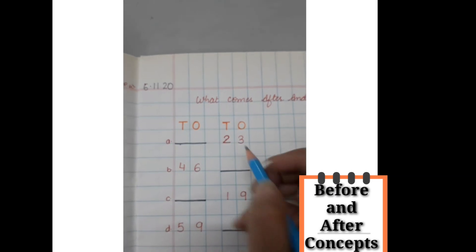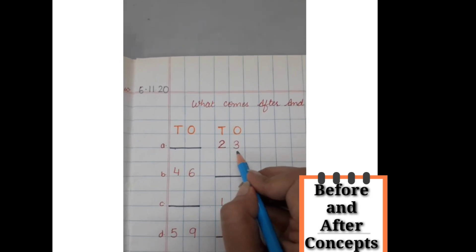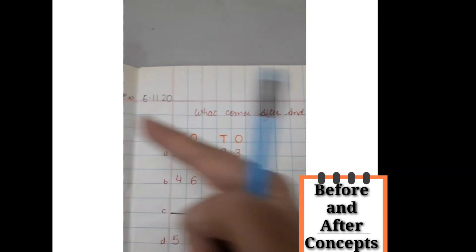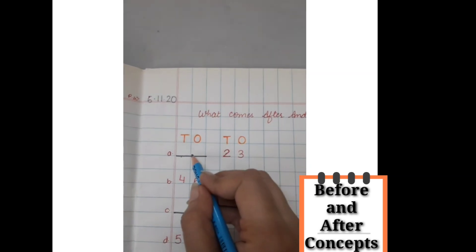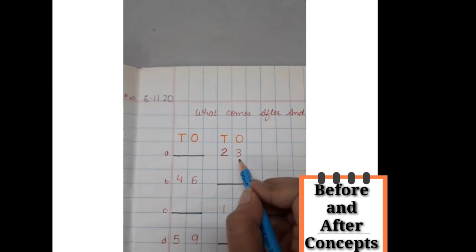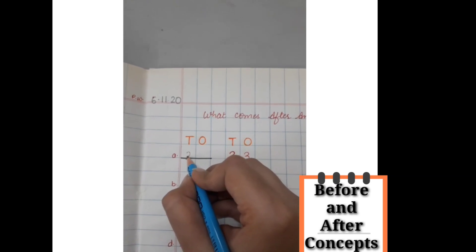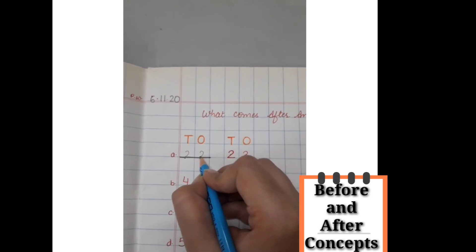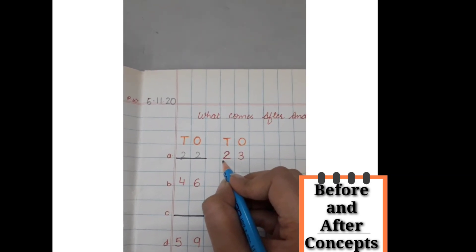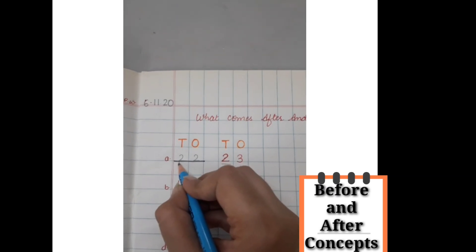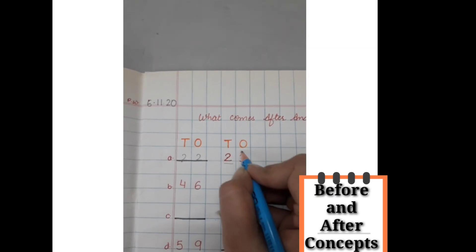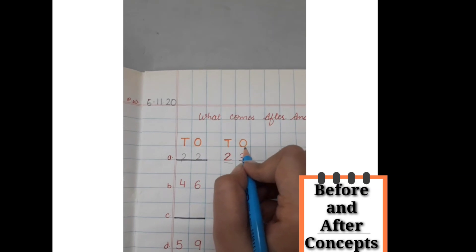Now let us start. Which is our first number? 23. Now we have to go backward, so we have to do what comes before. What comes before 23? 22. Did you see the tens place number is same? Only we have to do the backward counting for the ones place number.